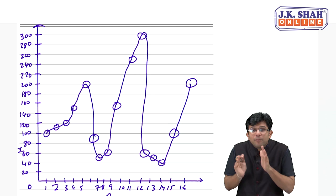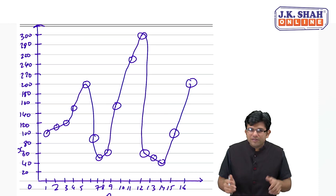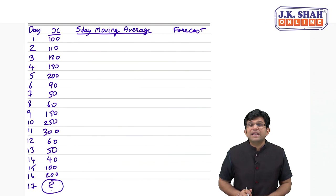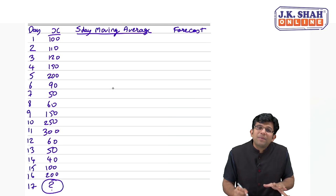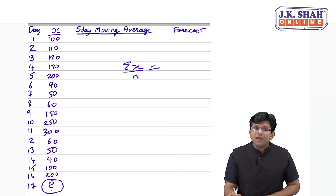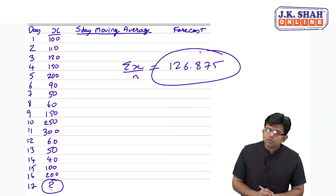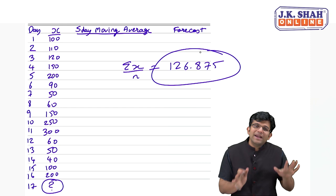So this is your data of X on a graph. Can you see it has gone up, down, up, down, up, down, with steep curves. This curve is the graph made out of coordinates of actual prices of X. X has gone through a lot of ups and downs. Now that we have plotted those coordinates, let us understand the concept of averages. Static average is nothing but the simple average of all 16 observations.